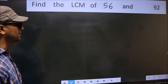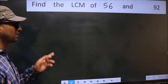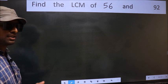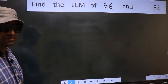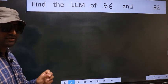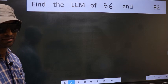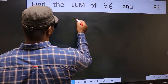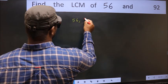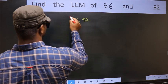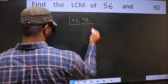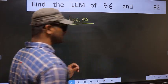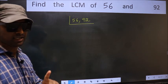Find the LCM of 56 and 92. To find the LCM, first we should frame it in this way: 56, 92. This is your step 1.